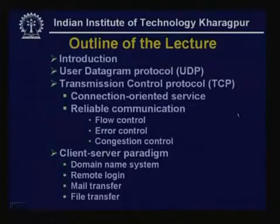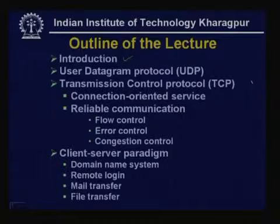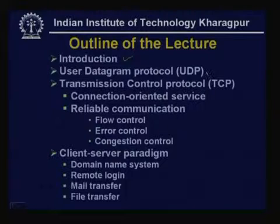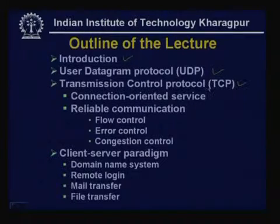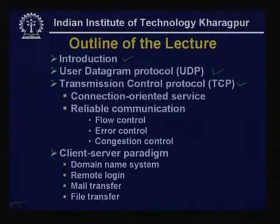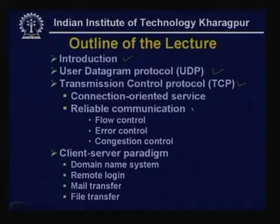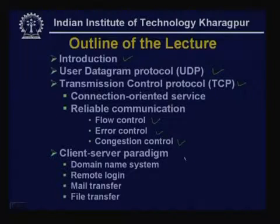First I shall give a brief introduction which will put you in perspective of the need for UDP and TCP — the transport layer protocols. We shall introduce two transport layer protocols: one is User Datagram Protocol known as UDP, and another is Transmission Control Protocol, TCP. UDP is a connectionless unreliable datagram service, while TCP is a connection-oriented service providing reliability through flow control, error control, and congestion control.